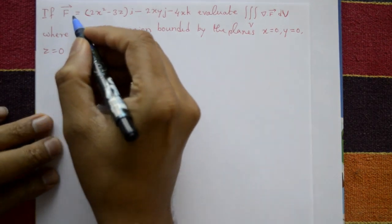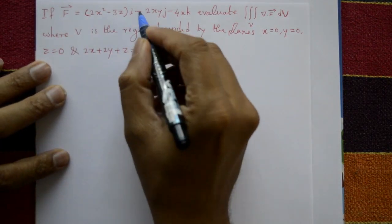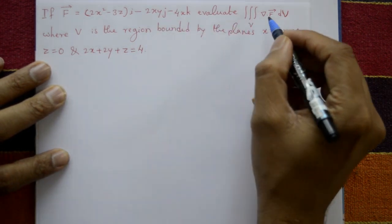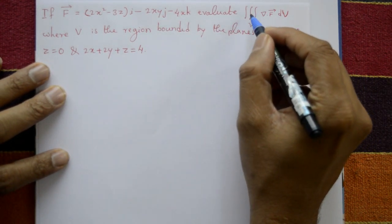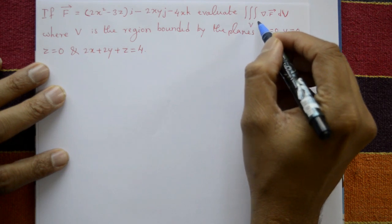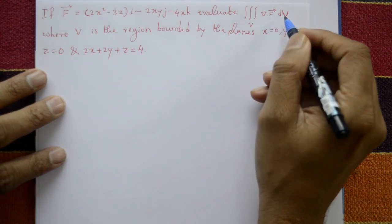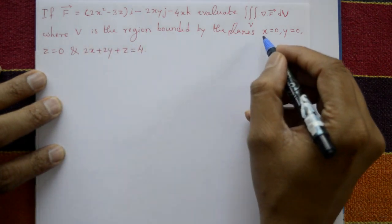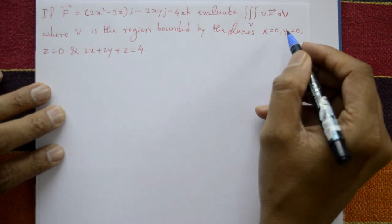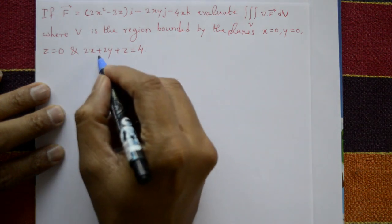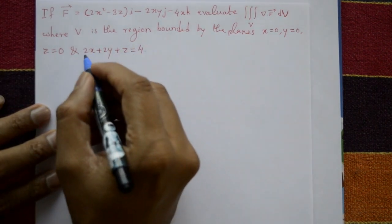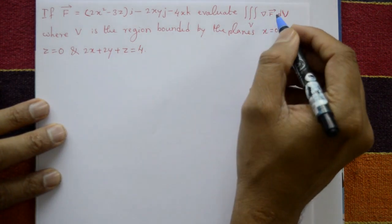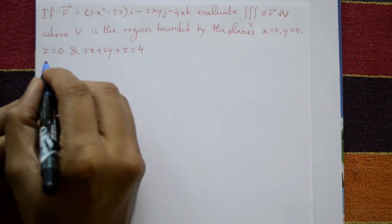If vector F is equal to (2x² - 3z)i - 2xy·j - 4x·k, evaluate the triple volume integral of del·F dv, where v is the region bounded by the planes x = 0, y = 0, z = 0, and 2x + 2y + z = 4. Now evaluate this. Solution: